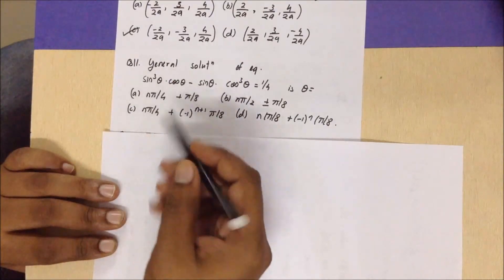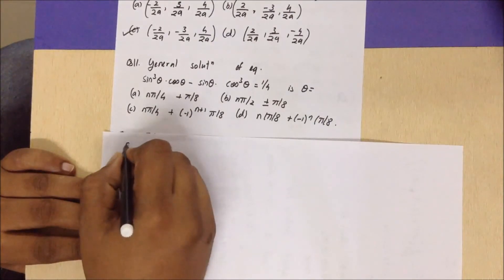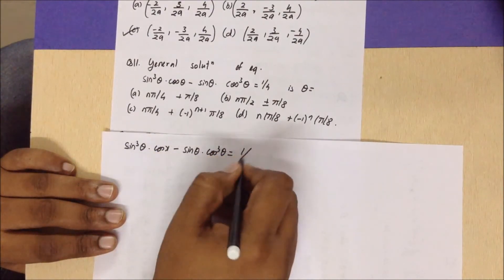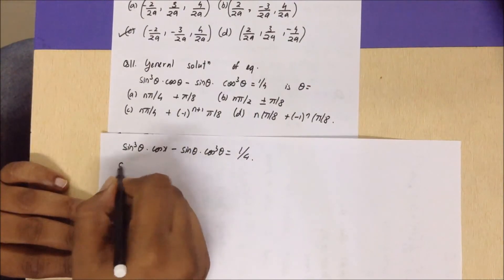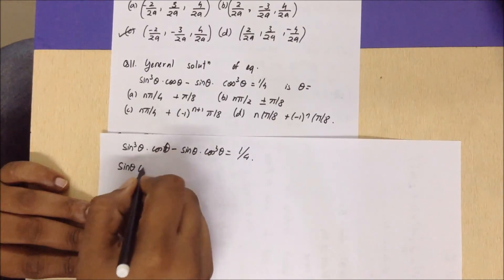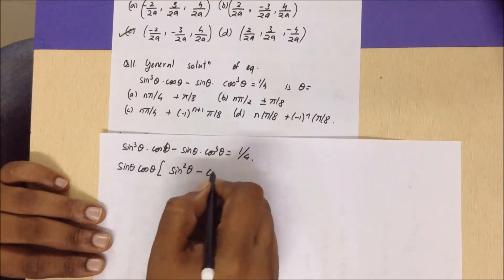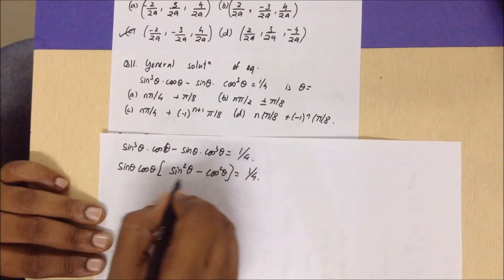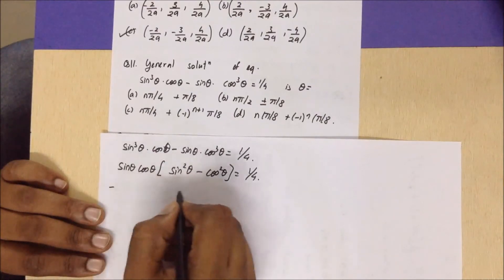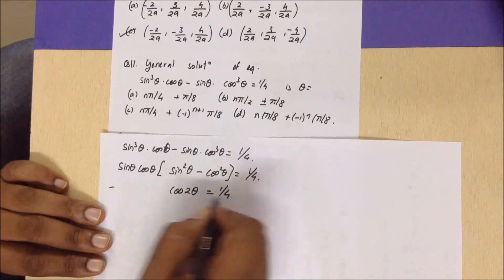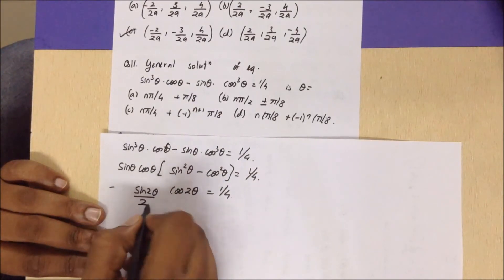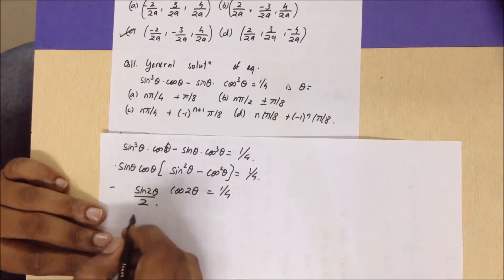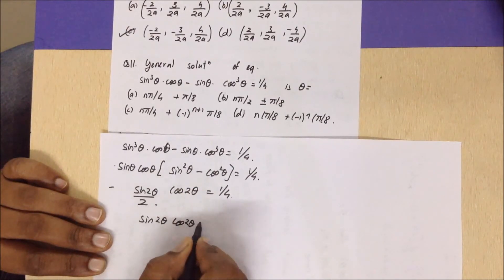Finally: find the general solution of sin³x·cosx − sinx·cos³x = 1/4. Factoring out sinx·cosx gives sinx·cosx(sin²x − cos²x) = 1/4. Note sinx·cosx = sin2x/2 and sin²x − cos²x = −cos2x. So −(sin2x/2)·cos2x = 1/4, i.e., −sin2x·cos2x = 1/2.